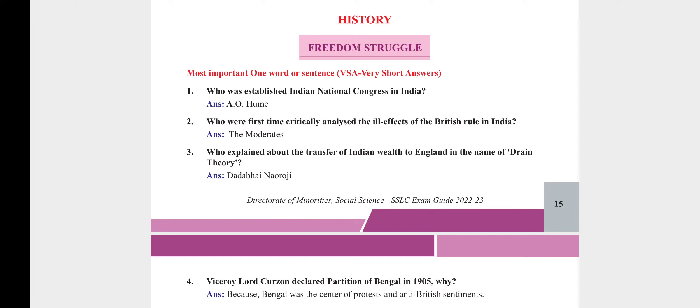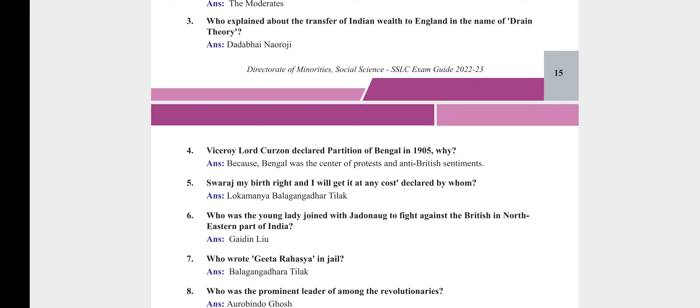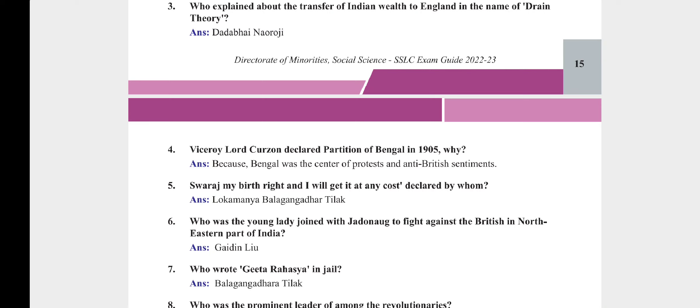Who explained about the transfer of Indian wealth to England in the name of Drain Theory? Dadabhai Naoroji. Lord Curzon declared the Partition of Bengal in 1905 because Bengal was the center of protest and anti-British sentiments. 'Swaraj is my birthright and I will get it at any cost' was declared by whom? Lokamanya Bal Gangadhar Tilak.